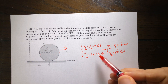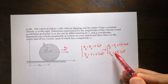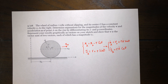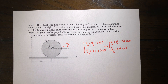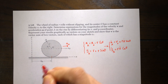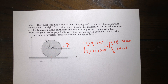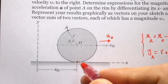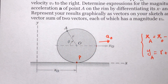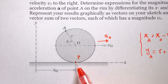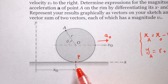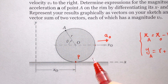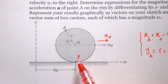Before finding the acceleration of A — which we will get by taking another derivative of these equations — let's examine one specific point that gives a very important result. Look at the point of the disk that is in contact with the ground. What is the velocity of that point? Let's call it point P — this point of the disk is momentarily in contact with the ground. What is the velocity of point P at that specific moment?